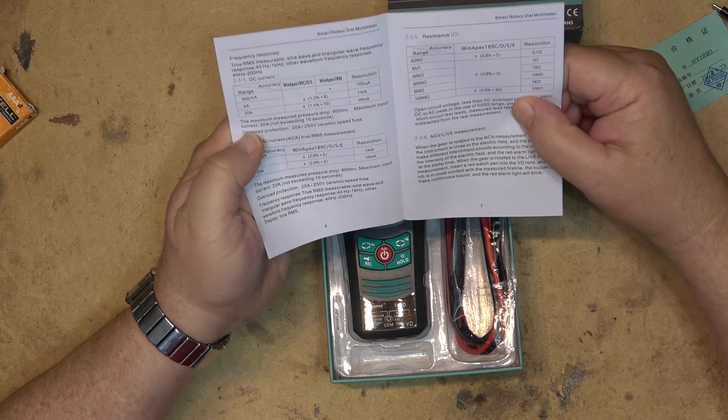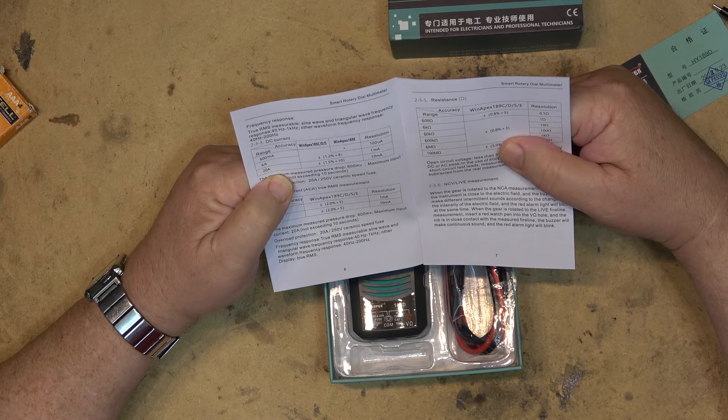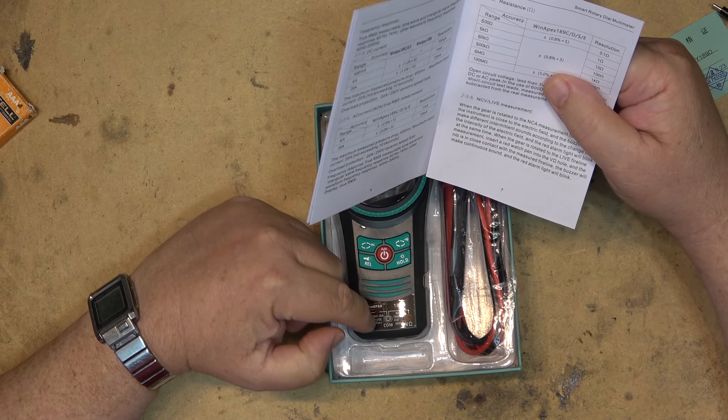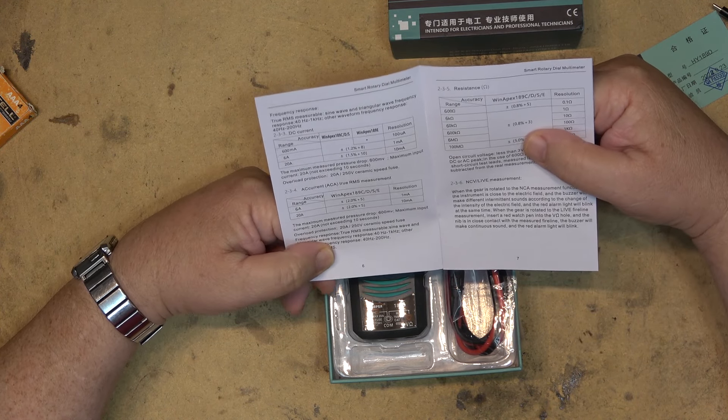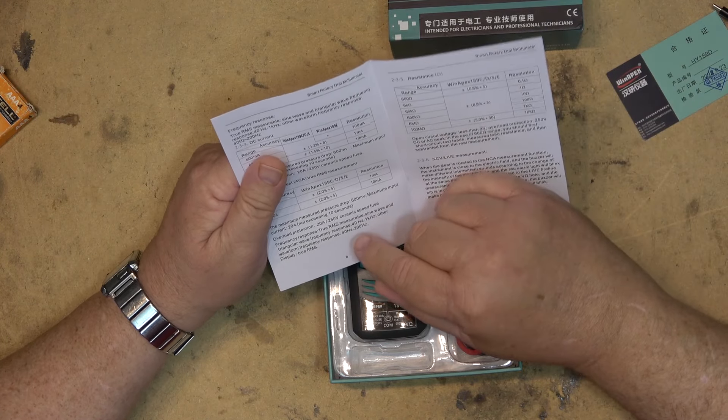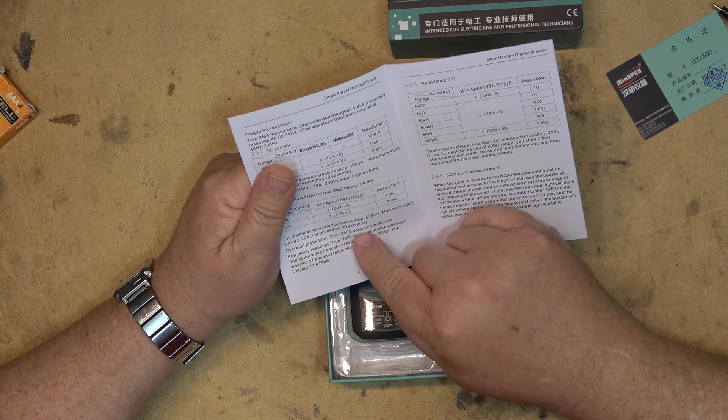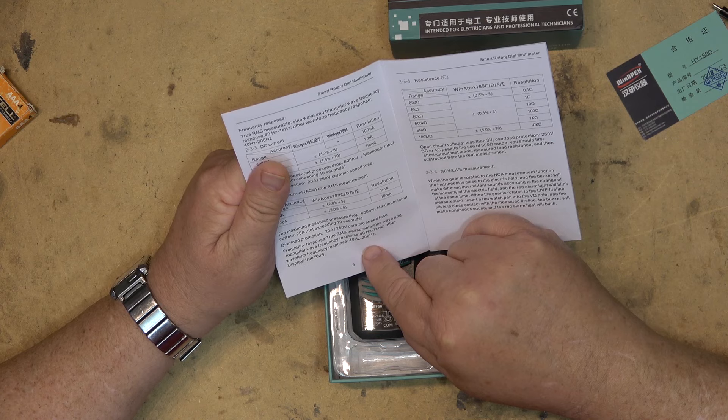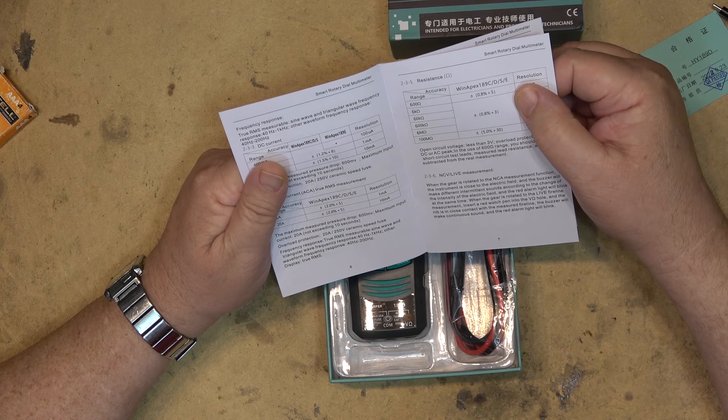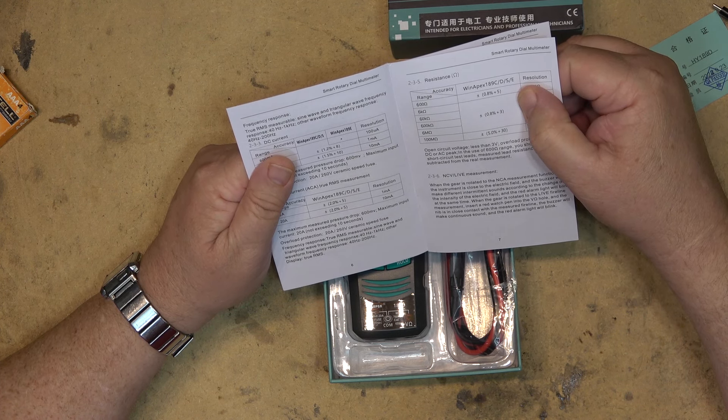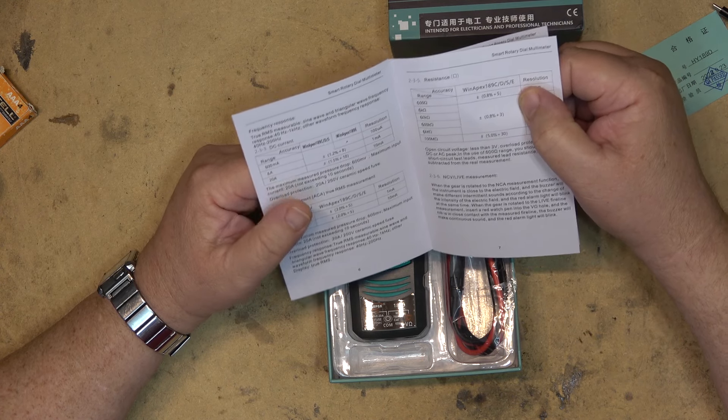We can look at the specs. This one will register up to 20 amps on the ammeter portion. It's fused, says 20 amps maximum time 10 seconds when you're at full power. Maximum measured current input 20 amps, not exceeding 10 seconds. Overload protection is a 20 amp 250 volt ceramic speed fuse. It'll measure frequencies up to 1 kilohertz for sine wave and triangular wave input, and other waveforms up to 200 Hertz.